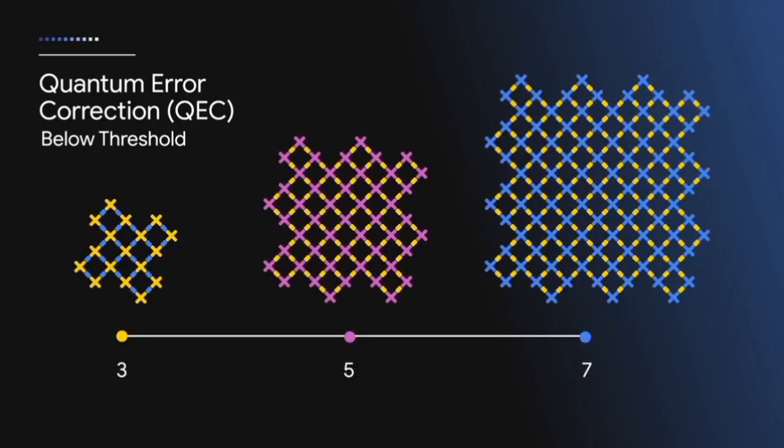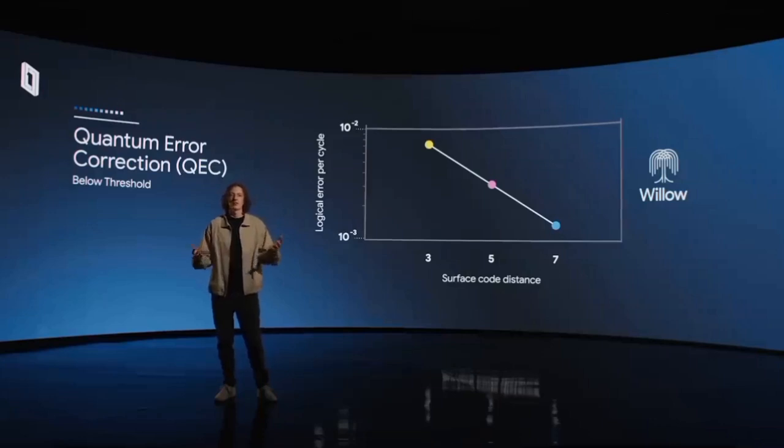Let me break this down for you. A 3x3 grid of 17 qubits can handle fixing one mistake at a time. It's a basic proof that the system works. A 5x5 grid of 49 qubits can now handle 2 mistakes. And a 7x7 grid of 97 qubits can handle 3 mistakes at once. The revolutionary part is that normally when you add more qubits, you get more errors. But Willow does the opposite. The bigger the grid gets, the better it handles.